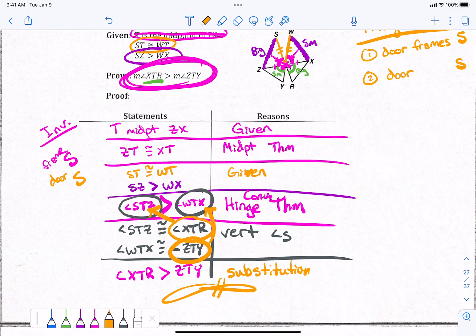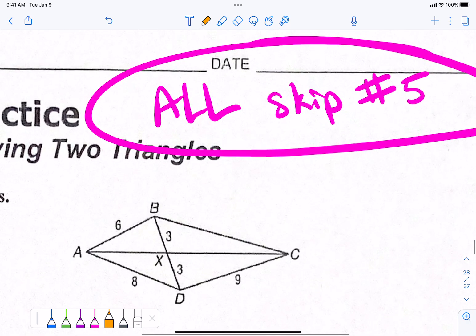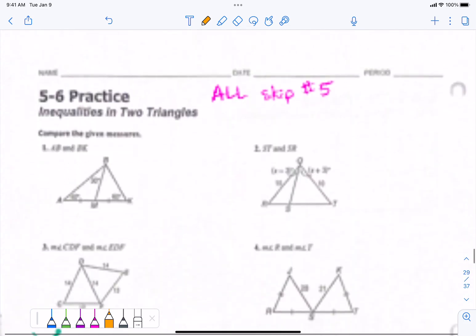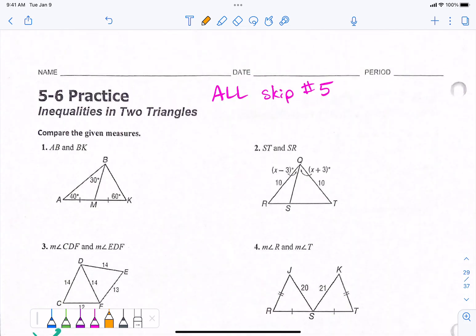All right, the homework. Do all on both sides, but skip number five on each side. So, all but skip number five and all skip number five. They're proofs. All skip number five. All skip number five.